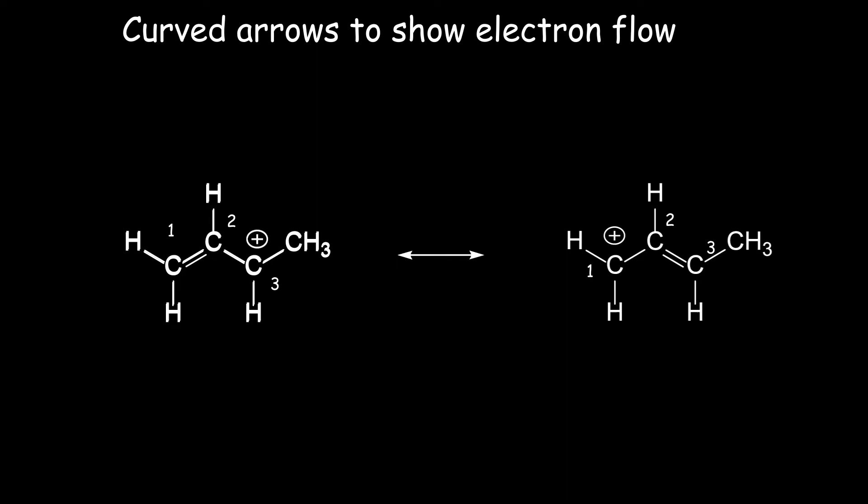Note that the three carbons involved are labeled 1 to 2 to 3, and all have p-orbitals. Each of these three carbons are all sp2 hybridized. C3 has an empty p-orbital, and there is a formal positive charge.